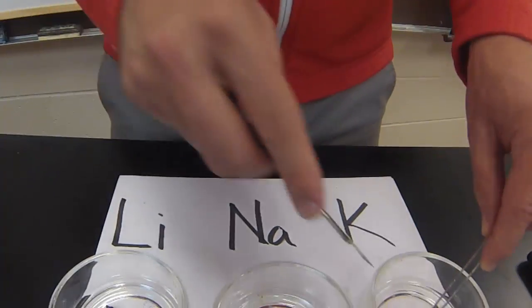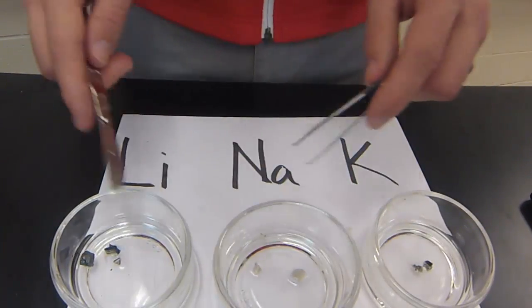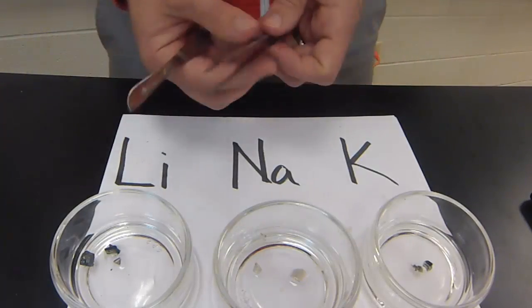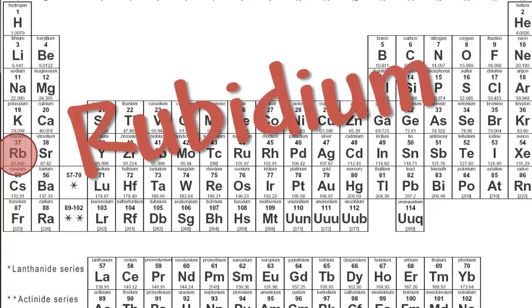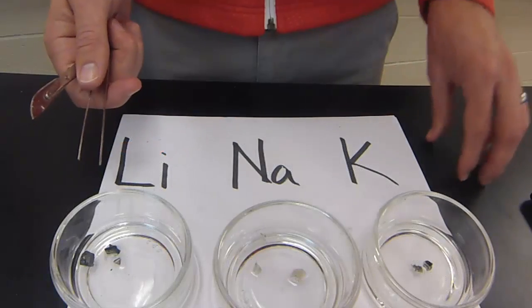If we continue down the periodic table to the next one, it would be rubidium. Based on this trend, we would expect rubidium to be even softer.